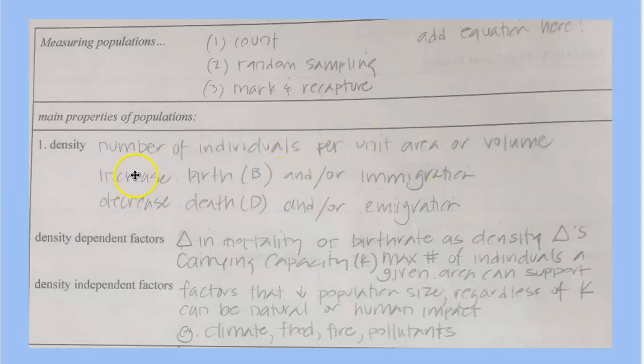Density is increased by births, also organisms of the same species coming into the population. And then decreases are a result of either deaths or organisms leaving a population. Remember,